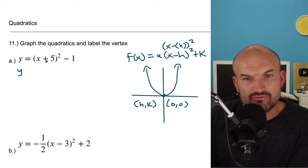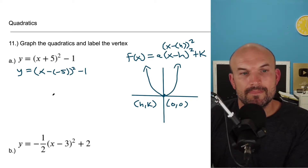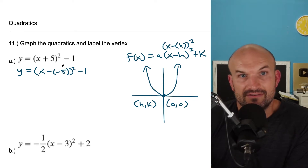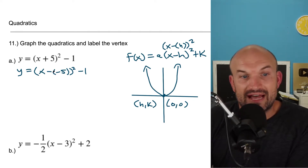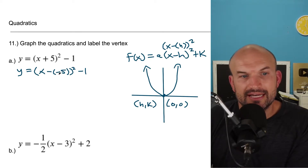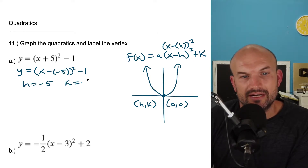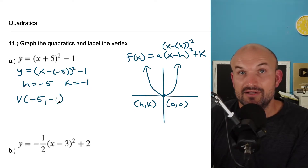What you're simply going to do is write it in this exact same form. So I can write this as a times x minus negative five, quantity squared, minus one. Because isn't minus a negative five positive five? Yes it is. So h equals negative five and k equals negative one. Now I can write my vertex: vertex is going to be negative five comma negative one.